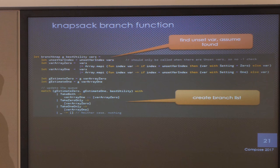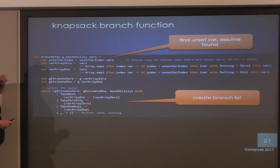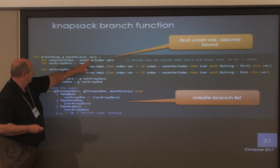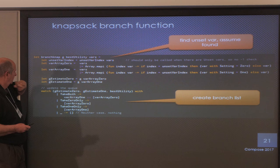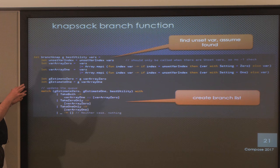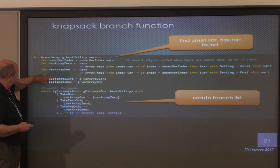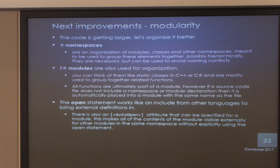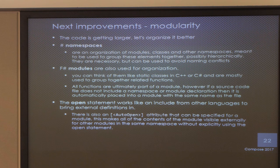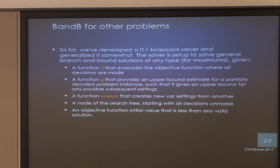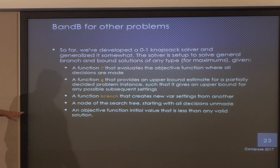The branch_map function takes a current search tree node, G function, and current best utility. It finds array_0 and array_1 cases, gets their estimates, uses the active pattern to decide which ones to take, and adapts the queue accordingly. The code in the downloads is getting quite large - there are namespaces, modules, and opens that work like includes. So far we've developed a general 0-1 solver and generalized it with a branch function to handle other problems.